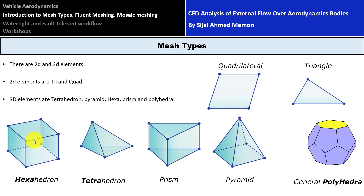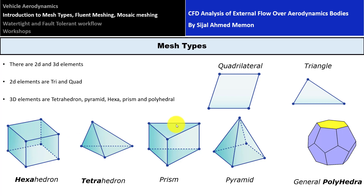Then we have hex elements, known as hexahedron in full form, but in the CFD community they are called hex elements. These elements have a rectangular base and top, with rectangular sides. Then we have prisms: in a hexahedron the top and bottom are rectangular, but in a prism the top and bottom are triangular and the sides are rectangular — so we call it a triangular prism. For five sides we call it a pentaprism. The only condition is that the sides must be rectangular. Finally there is the general polyhedral element, which can have many sides and different edges.